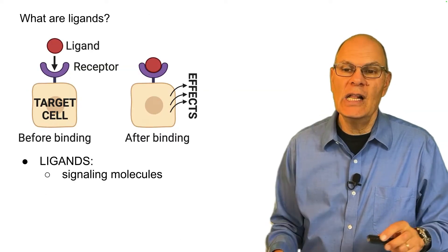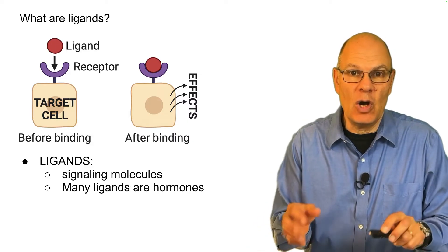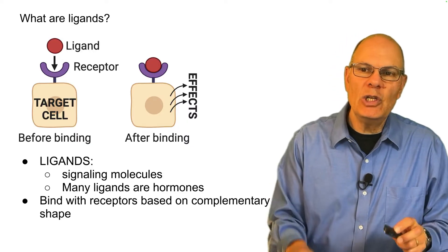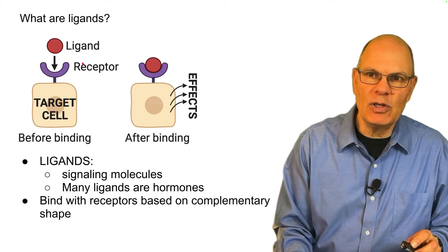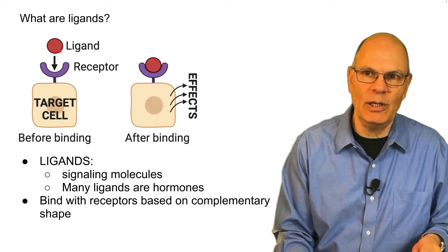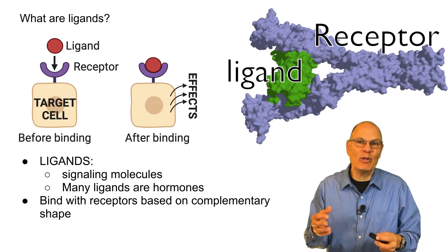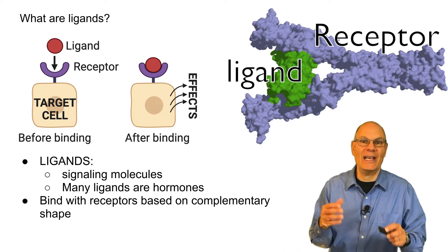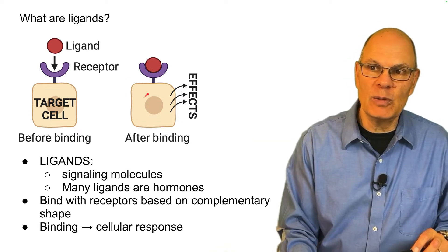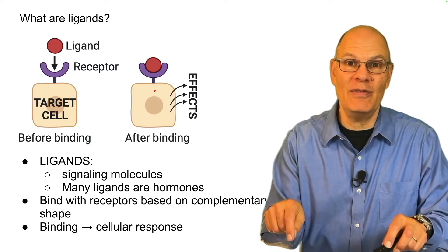Ligands are signaling molecules. Many ligands are hormones. What they do is bind with receptors based on complementary shape — represented simply here with a circle and an arc, but in biology the shapes are extraordinarily complex, like enzymes and substrates. Binding leads to a cellular response, and the mechanism by which that happens is the main focus of this video.